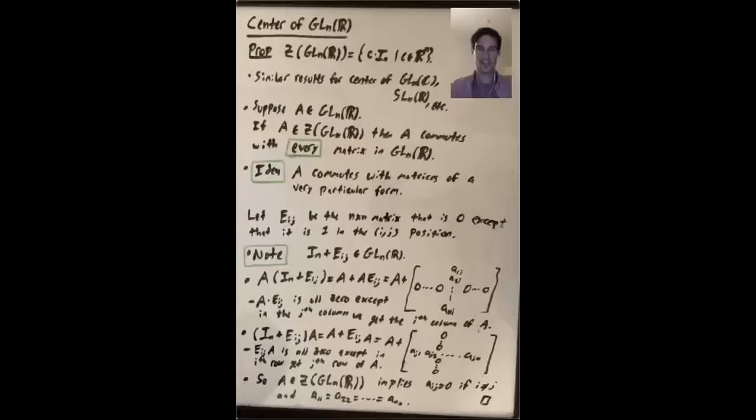In the last video, we saw that when n is odd and bigger than 1, we can write GLnR as isomorphic to the direct product of SLnR and a subgroup isomorphic to R star.